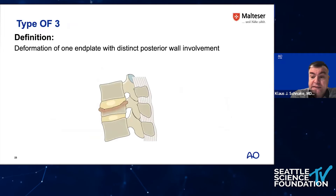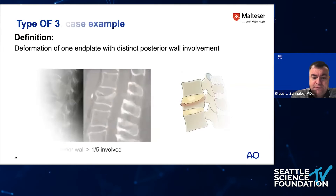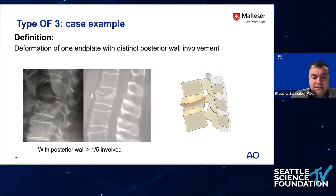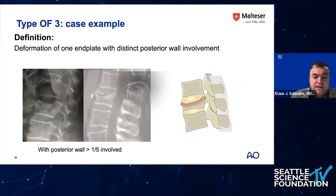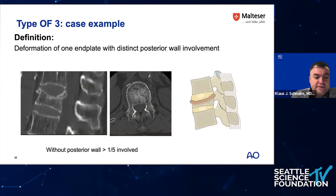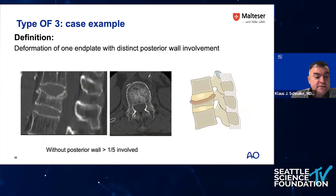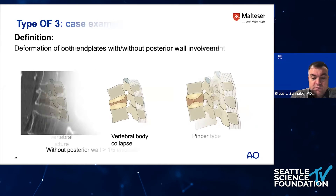OF3 is the one with distinct posterior wall involvement — a classical incomplete burst type injury. Here you can see that almost half of the posterior wall is involved. On the CT scan, you see one end plate deformation and a clearly distinct posterior wall involvement.